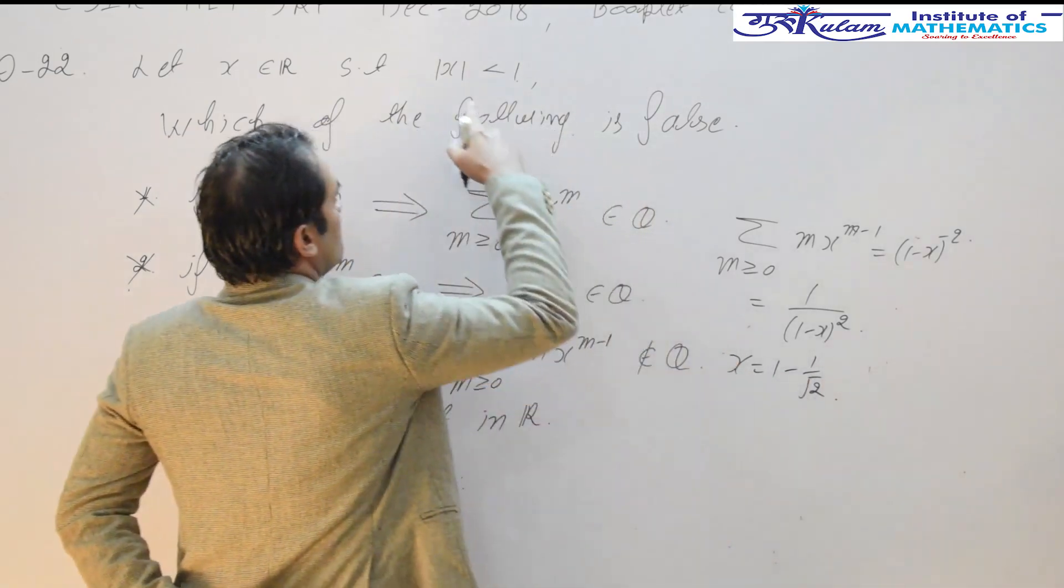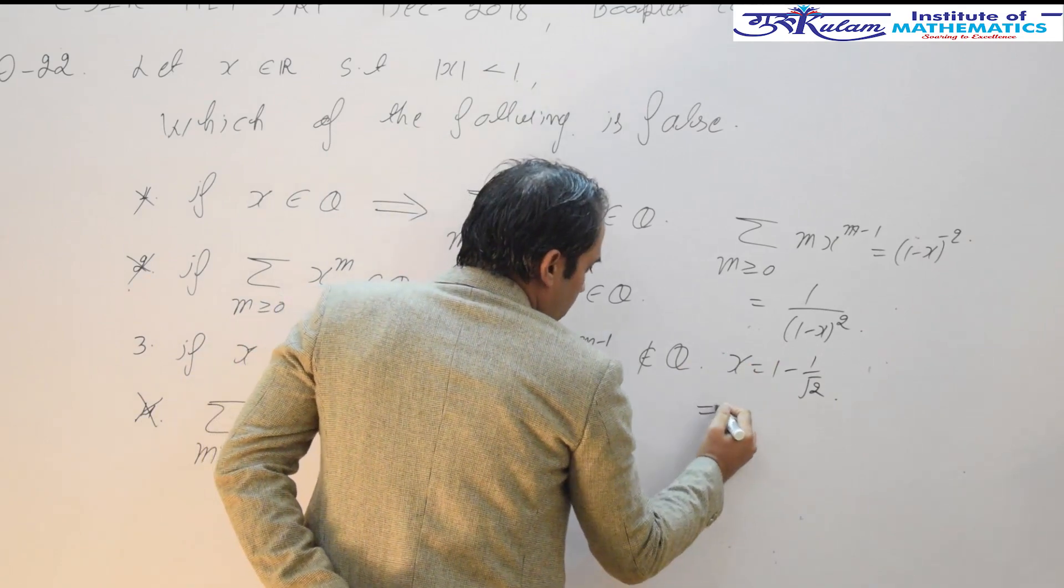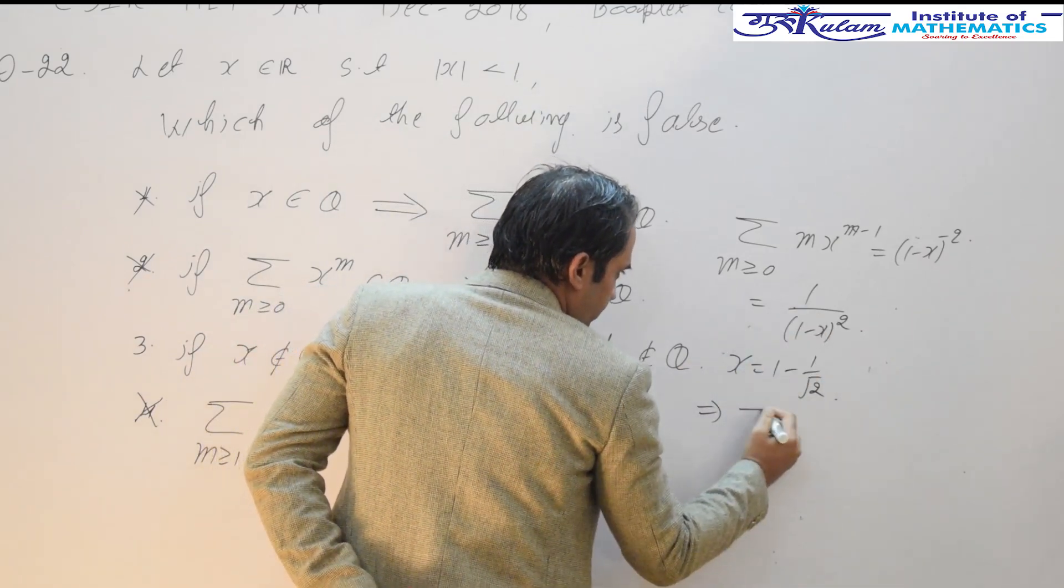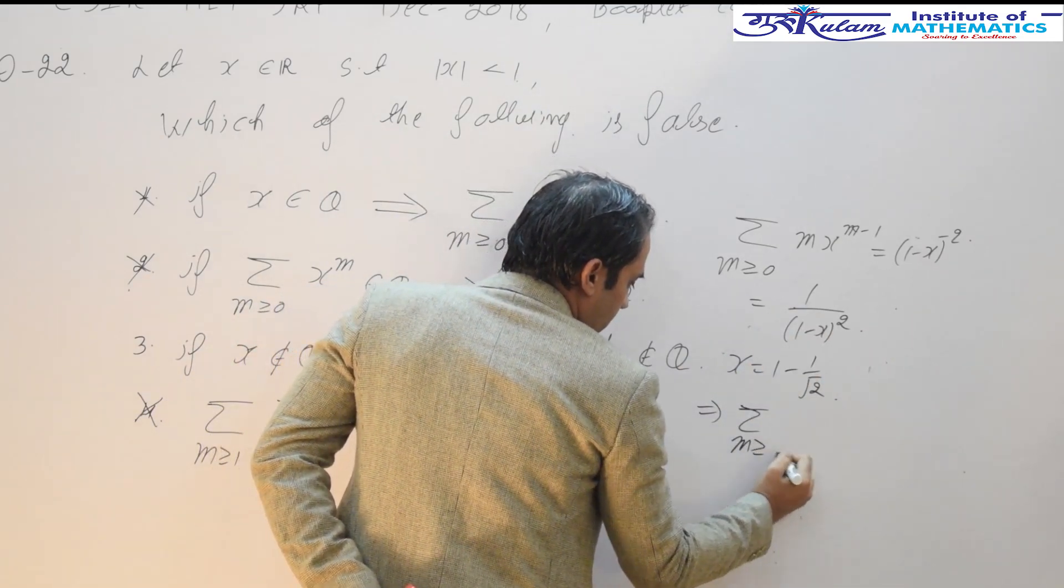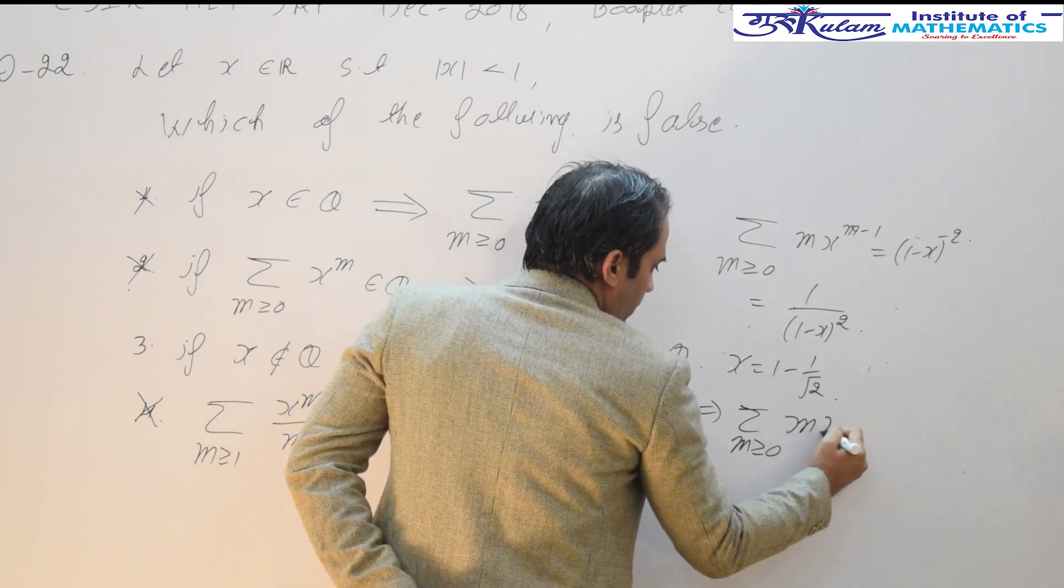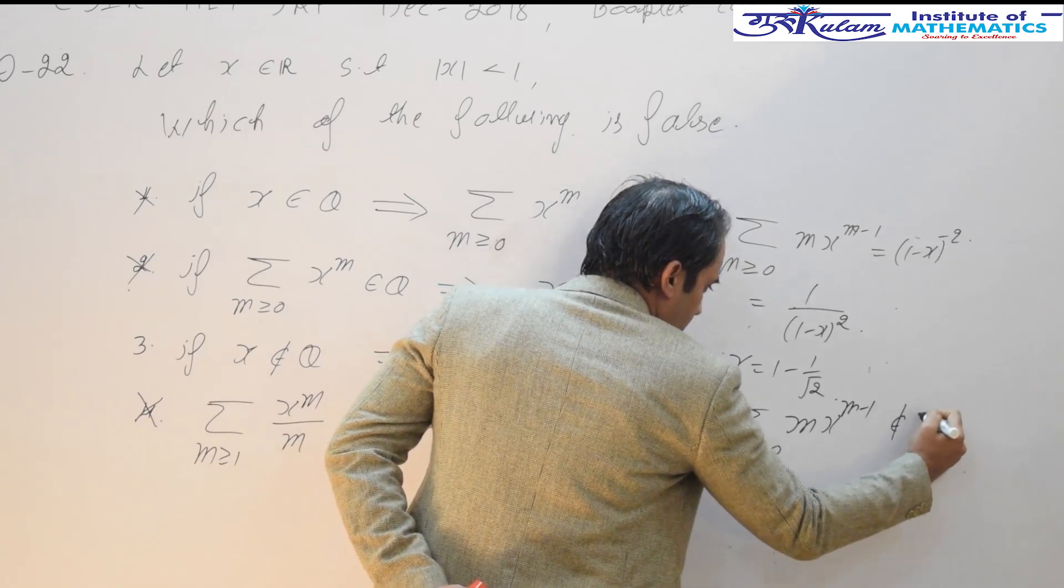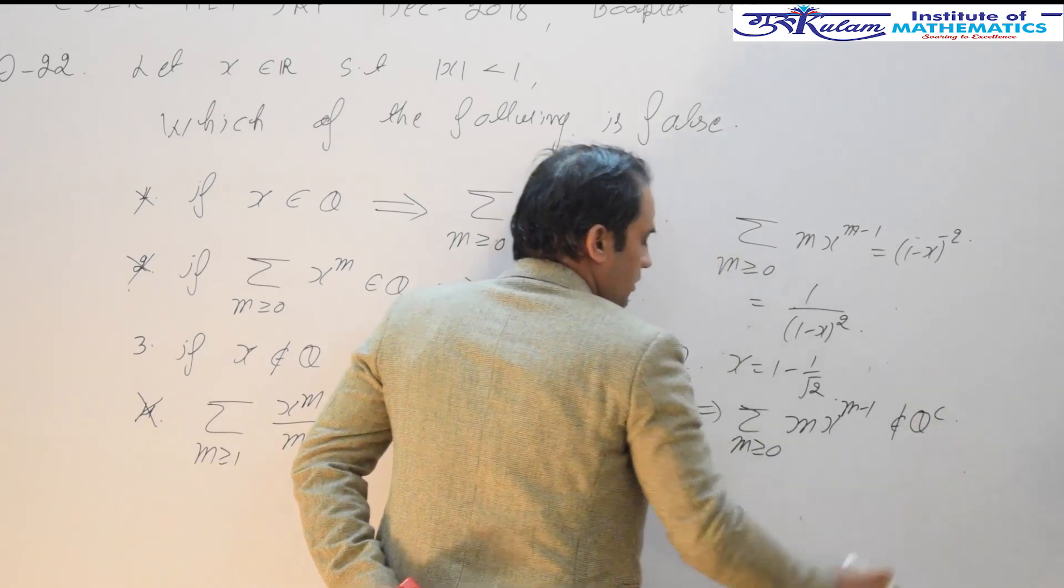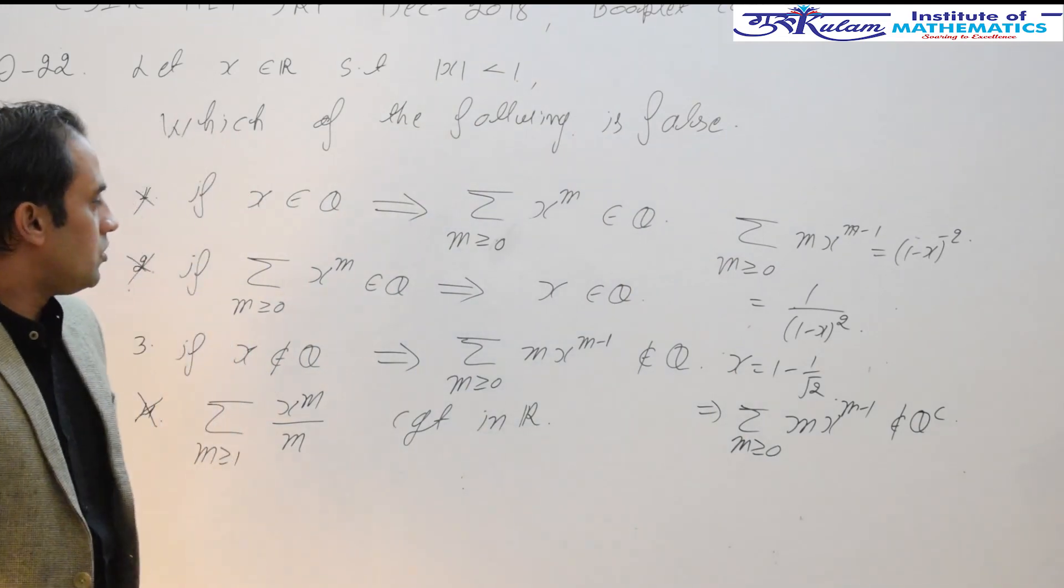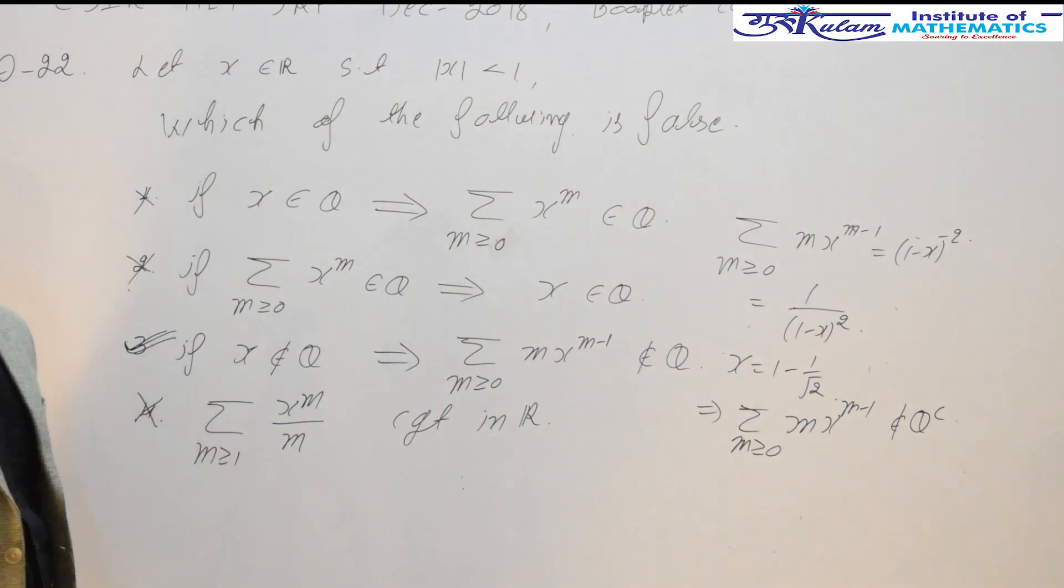If you will take x equals 1 minus 1 upon root 2—we have to choose x such that mod of x should be less than 1—this implies the summation m greater than or equal to 0, m into x to the power m minus 1, belongs to Q. You can easily verify this. This statement is definitely false. Hence, your answer is 3.